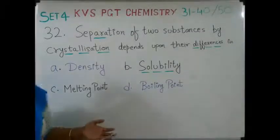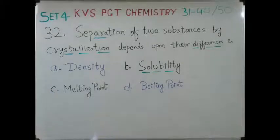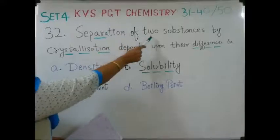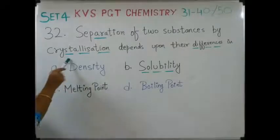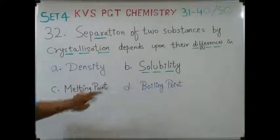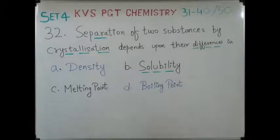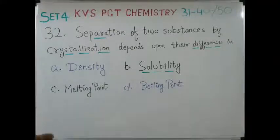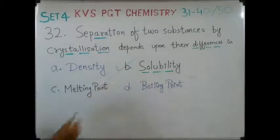The next question: separation of two substances by crystallization depends upon their differences in — option A: density, option B: solubility, option C: melting point, option D: boiling point. We know that the process of crystallization is based on the principle of solubility. The two substances differ in solubility, and hence for that kind of separation we use crystallization. The correct answer is B.